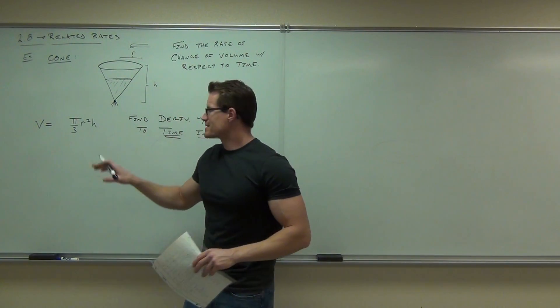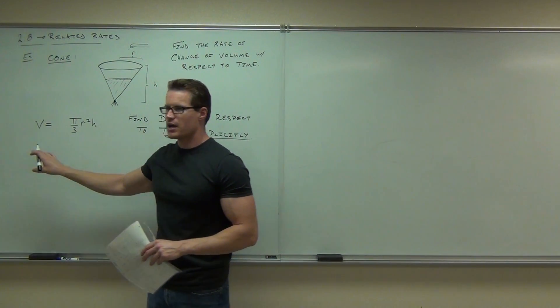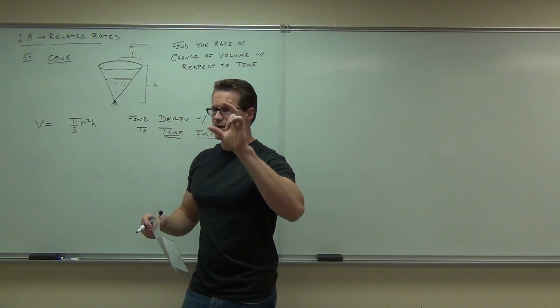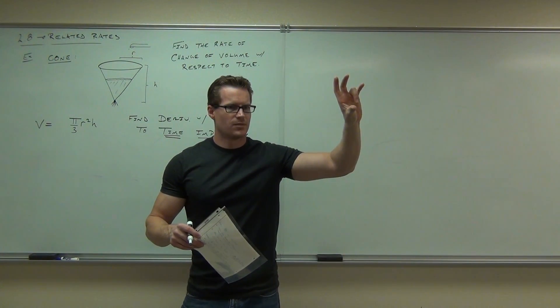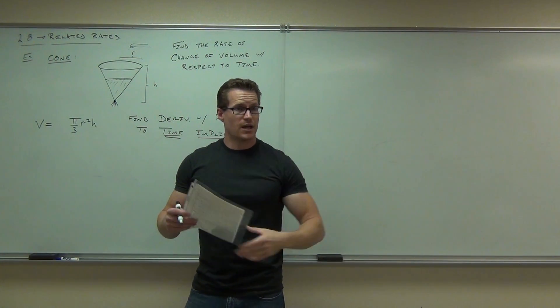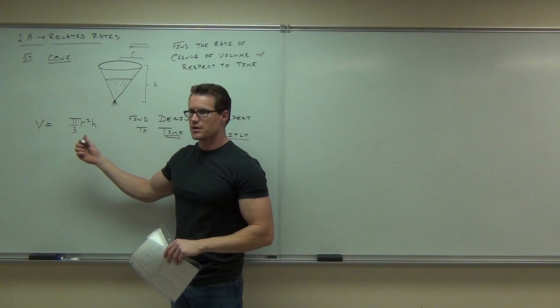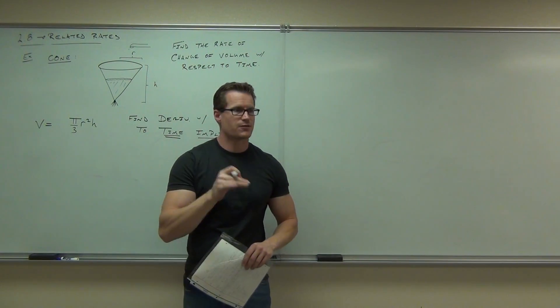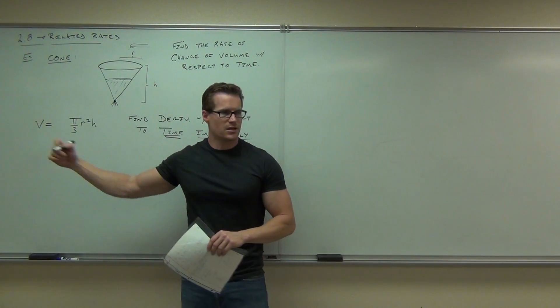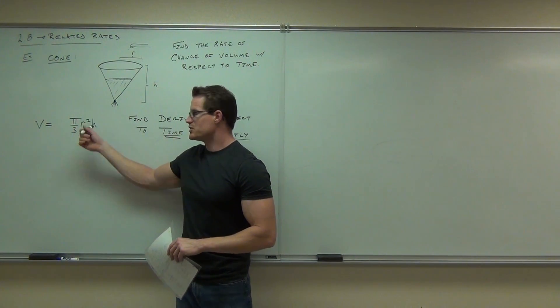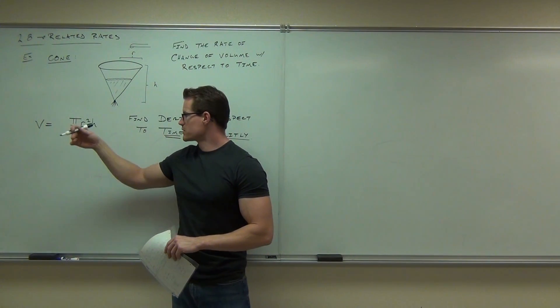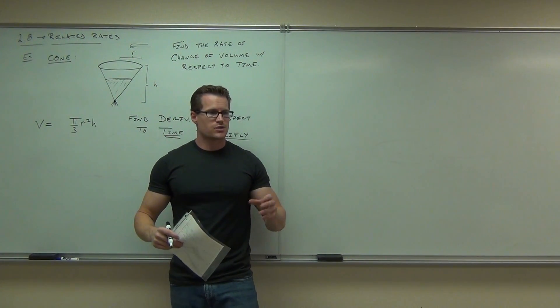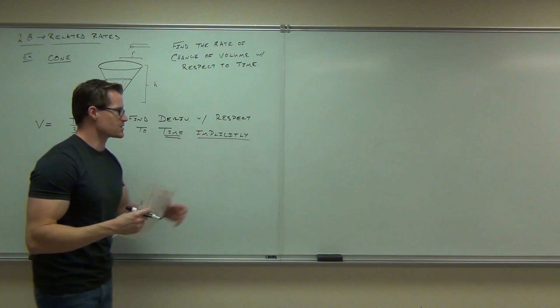But you just have to be careful. Because since these are all functions of time, do you remember that when y was a function of x, you had to take and put a dy dx after everything? Because it was a function of x. Now every one of these variables is a function of time. So we're going to have a d whatever dt after every one of them. Because they're all implicit functions of time. Notice how none of these are solved for t, right? I can't say h equals this t. V equals this t. I can't say that. So I can't solve them for t explicitly. So I have to treat them implicitly. Just like we did in the previous examples.